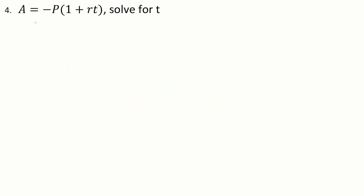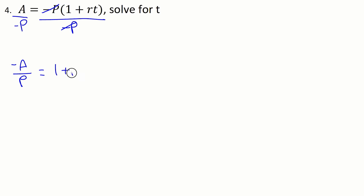Question four: a is equal to minus p times 1 plus rt, and we're solving for t. So we have a few different steps here, because we have multiplication by r inside a set of brackets and the negative p on the outside. So again, we're going to deal with the brackets last. So we'll divide by the negative p first. On the left-hand side, it's not usually our convention to put the negative in the bottom, so I'm just going to make it a negative a over p — we usually move it to the top — and we're going to get cancellation here. Now we can drop our brackets because they're no longer isolating those terms.